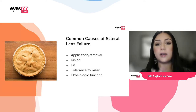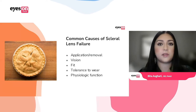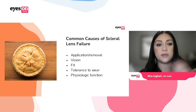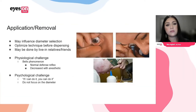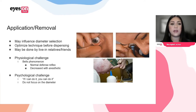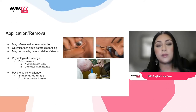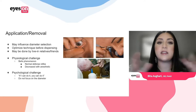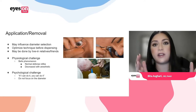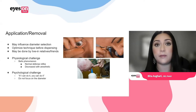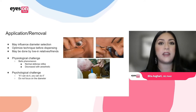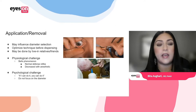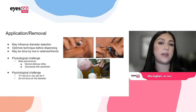Now diving into the common causes of scleral lens failure — it's the same things that are required for success. Limitations in application and removal, poor vision, and poor fit. For application and removal, sometimes because of the patient's natural anatomy you may pick a smaller diameter to make it easier, but really the most important part is optimizing the fitting technique for the patient in office. For your normal scleral lens size — anything smaller than 18 or 19 millimeters — it's really about optimizing technique.